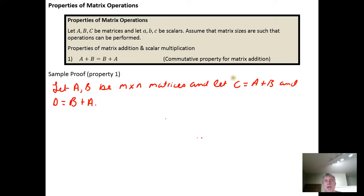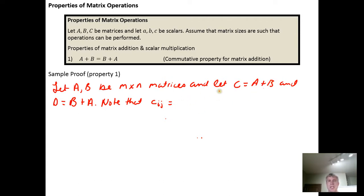We start by asking: what does an element in matrix C look like? Well, little c sub i j — the i-th row j-th column element in matrix C — based on the definition of matrix addition, is generated by taking the i-th row j-th column element in matrix A and adding it to the i-th row j-th column element in matrix B. So c sub i j equals a sub i j plus b sub i j, and these are both just real numbers.